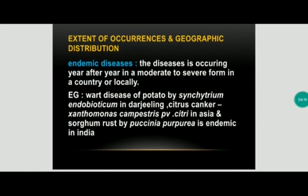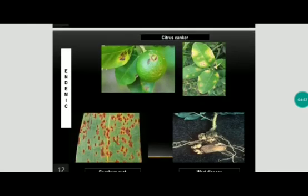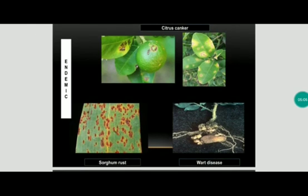Based on the extent of occurrence and geographic distribution, the first category is endemic disease. Endemic disease is one which occurs in a country or a locality year after year continuously, and it may be in moderate to severe form. Example: wart disease of potato caused by Synchytrium endobioticum, occurring in Darjeeling. In Asia, citrus canker caused by Xanthomonas campestris pv. citri; and in India, sorghum rust caused by Puccinia purpurea. Pictures shown: citrus canker, sorghum rust, and potato wart.